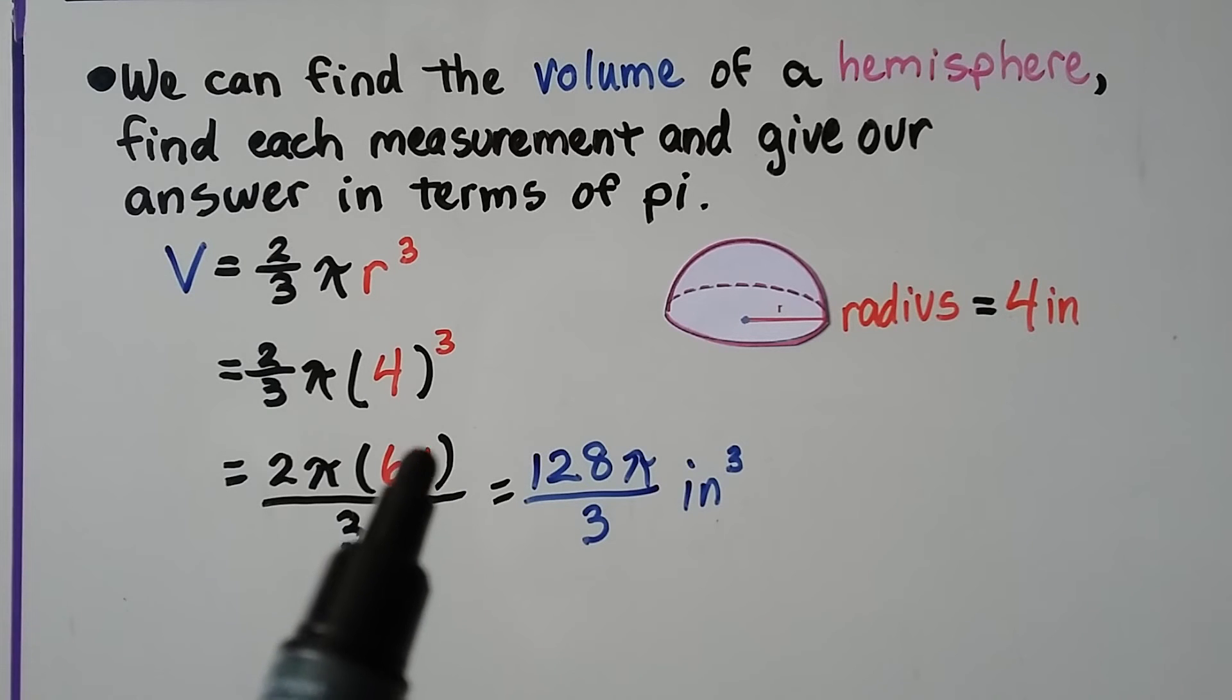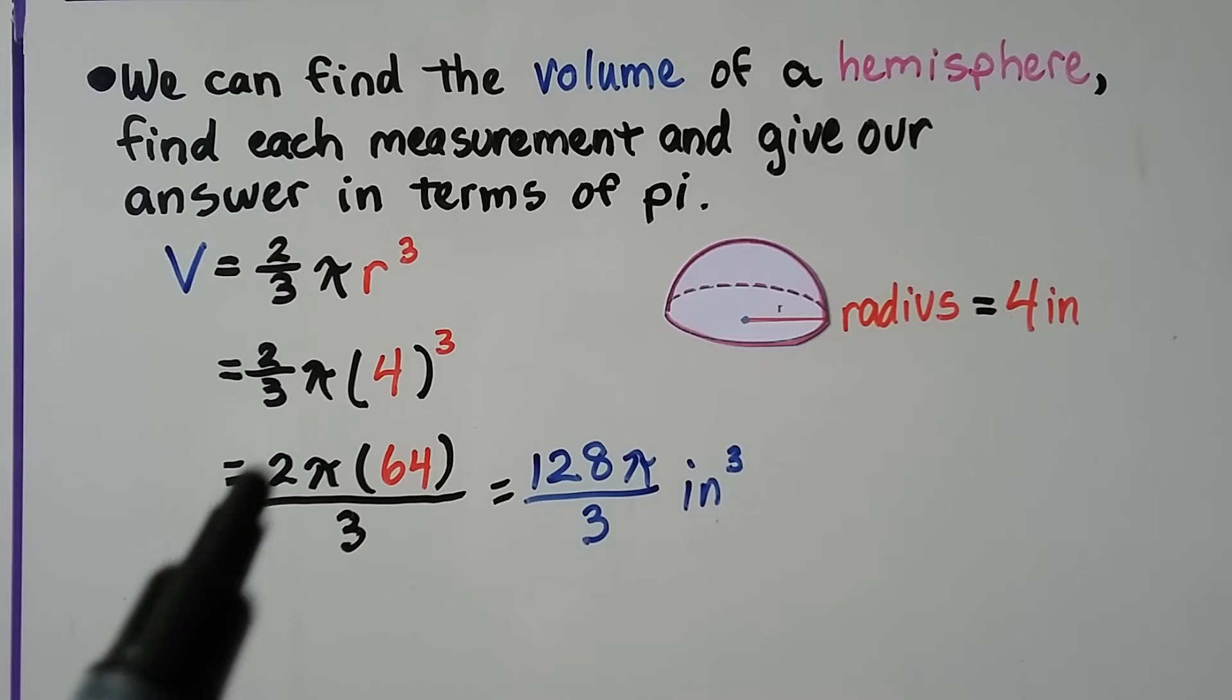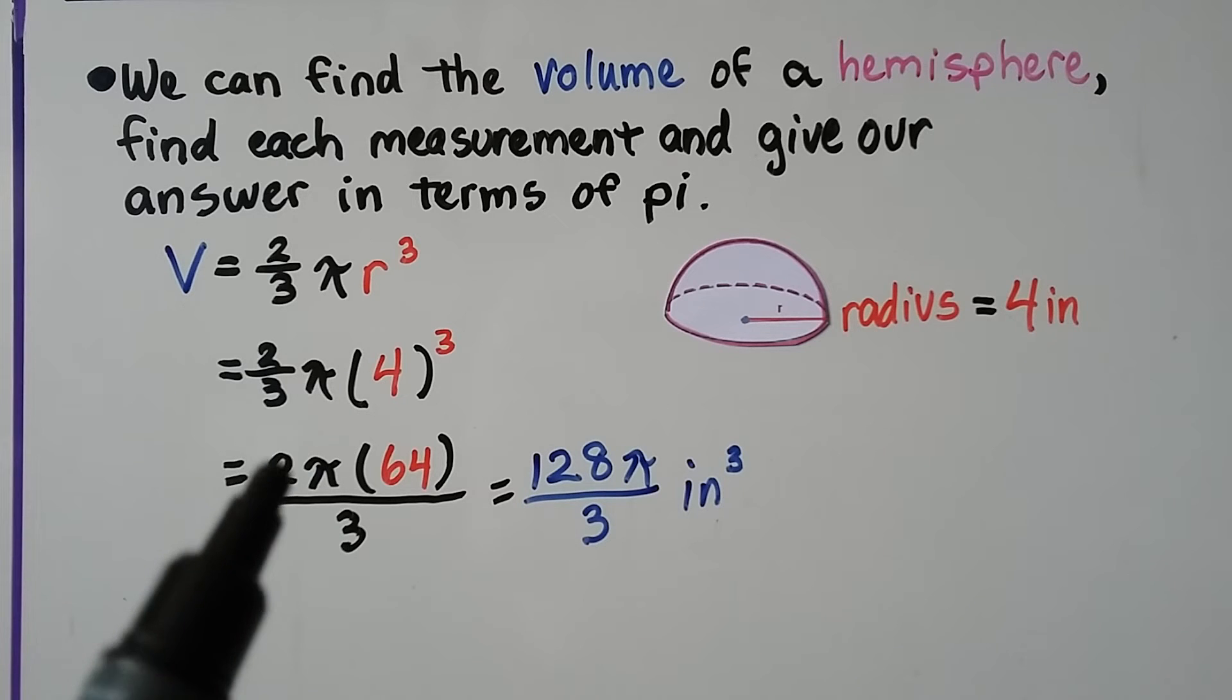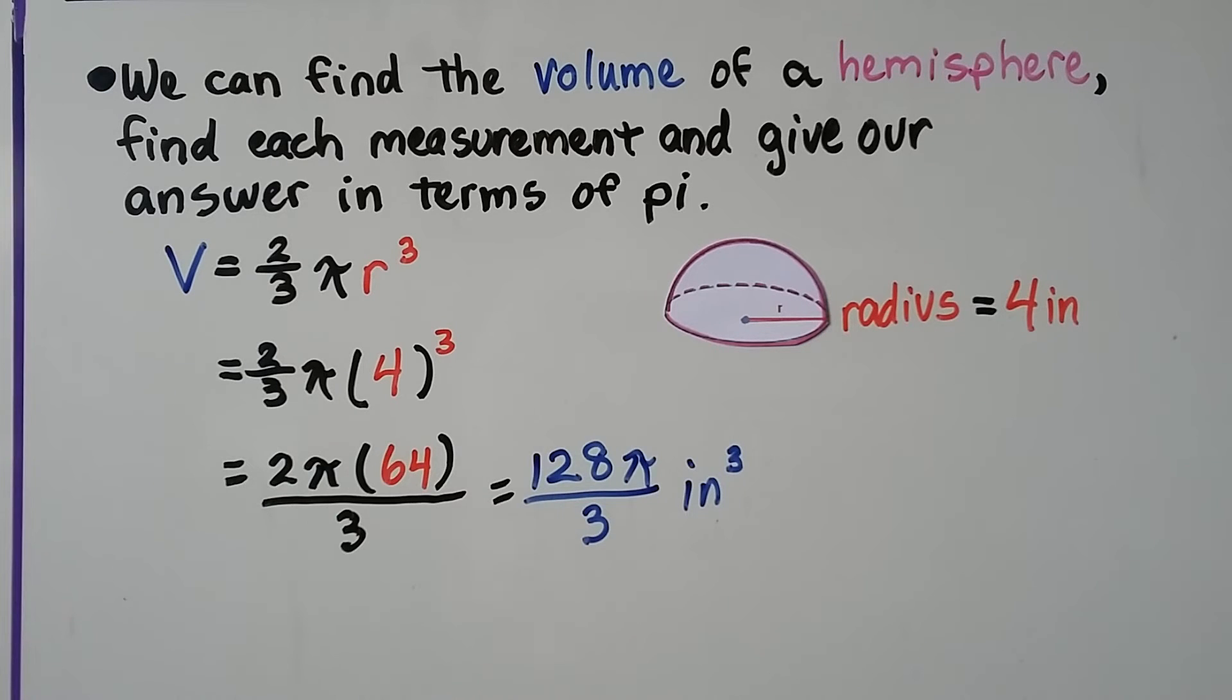We can write this as 2 pi times 64 over this 3. So, putting our answer in terms of pi, when we multiply the 2 times the 64, we get 128 pi over 3 inches cubed. It's the quotient of 128 pi and 3 inches cubed.